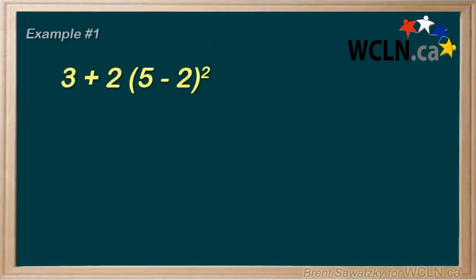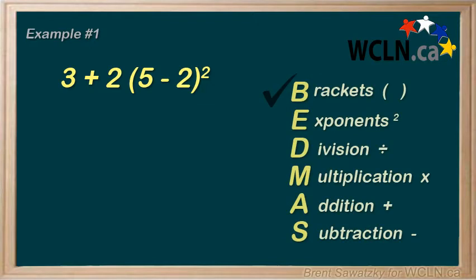Example 1: 3 plus 2 times 5 minus 2 in brackets squared. So, we think BEDMAS. Brackets? Well, sure, in this case, we do have brackets. 5 minus 2 is 3. So, our next line, 3 plus 2 times 3 squared now. So, on to the next one, exponents.